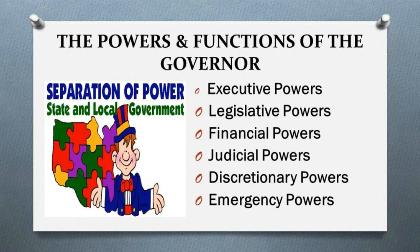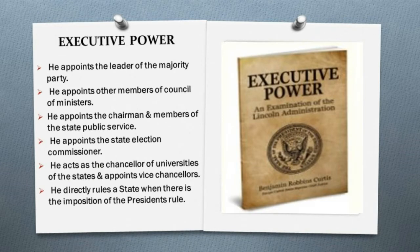Powers and functions of the governor: the governor has executive, legislative, financial, judicial, discretionary, and emergency powers. Under executive powers, he appoints the leader of the majority party in the state legislative assembly as the chief minister, appoints other ministers on the chief minister's recommendation, appoints the chairman and members of the state public service commission, acts as chancellor of universities, appoints vice chancellors, and directly rules the state when President's rule is imposed.